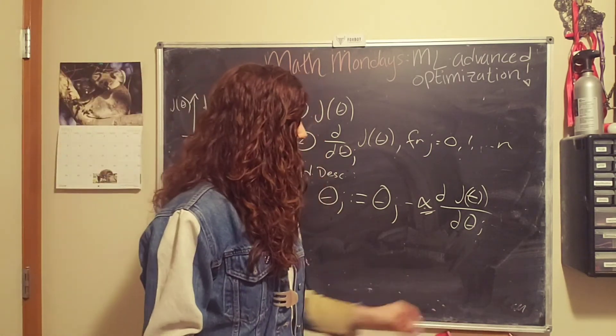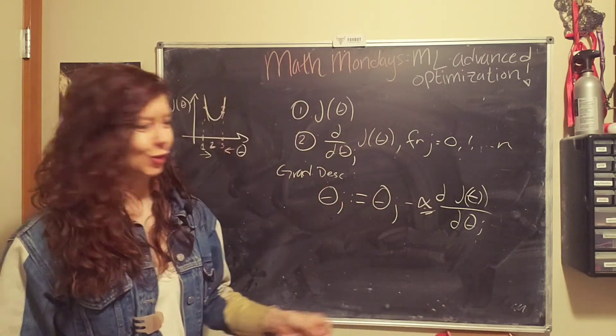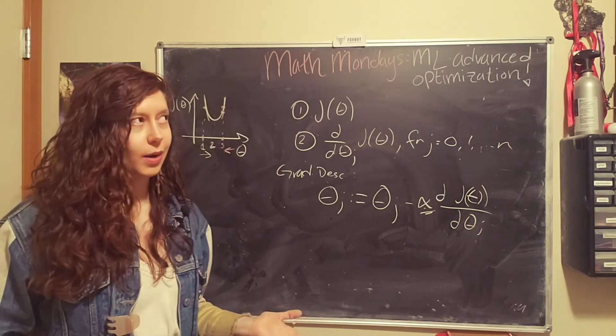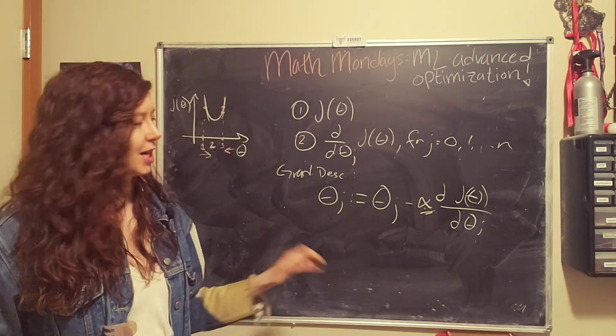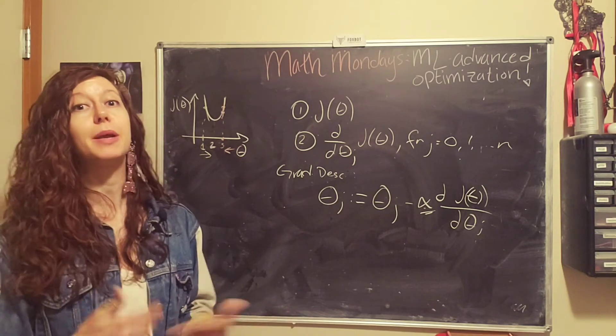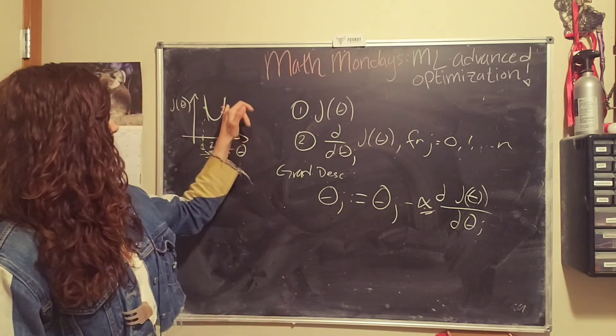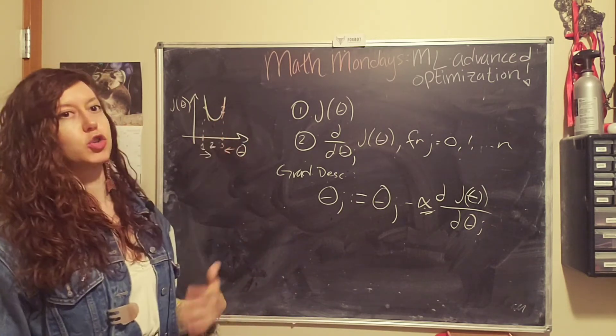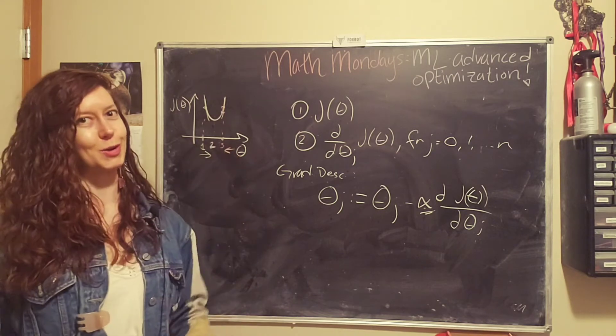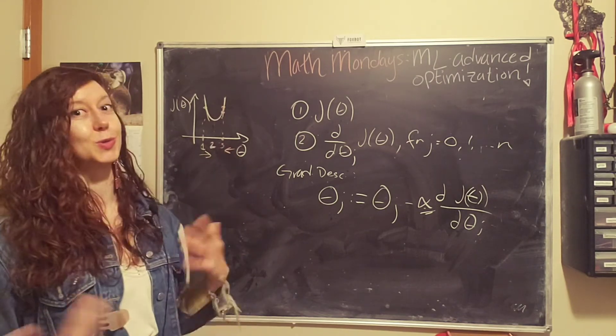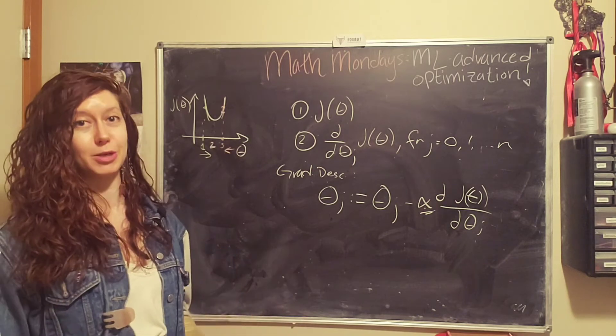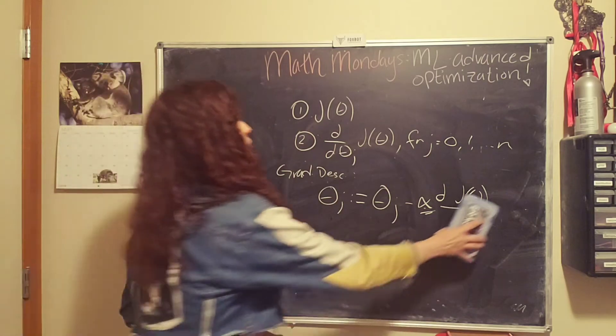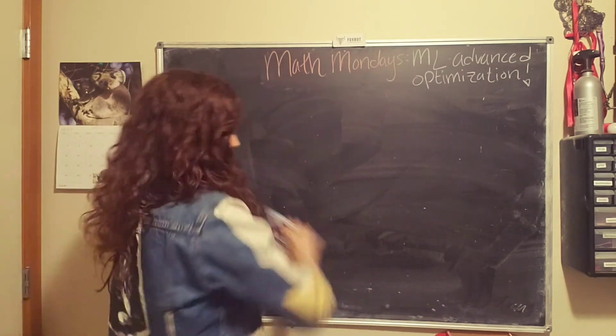So that's gradient descent. That's how it works. Partials, yay, calculus is useful. So why would you want to do anything different? Well, this can take a really long time because you have to do it for each parameter. And then you have to do it many, many, many more times because this can take a lot of steps. And oftentimes your cost function plot versus the parameter is not going to be a nice, happy parabola. It's also going to have multiple dimensions. So this can take a really long time.